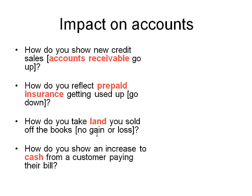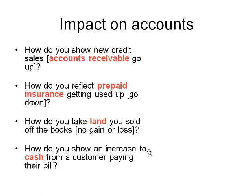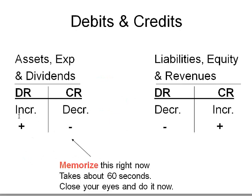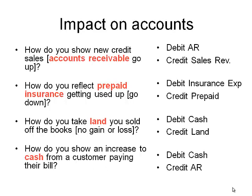Third: how do you take land you sold off the books? Land is an asset and you want it to go down — you credit it. You sold it for cash, so cash goes up. Cash is an asset, so you debit cash and credit land. Fourth: how do you show a customer paying their bills? Accounts receivable goes down and cash goes up — both are assets. To get cash to go up, you debit it. Accounts receivable goes down, so it gets credited. These are the journal entries without dollar amounts — we're practicing debit and credit.